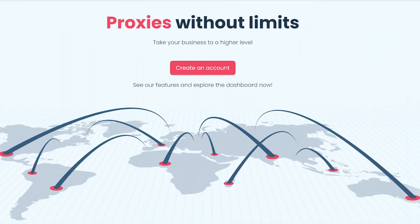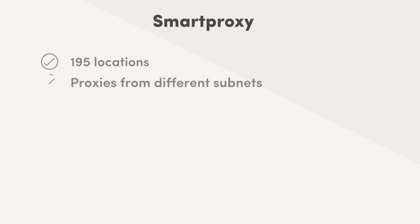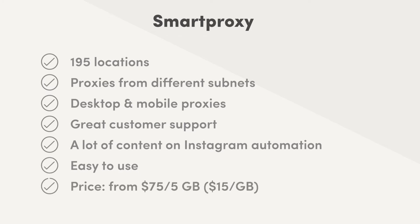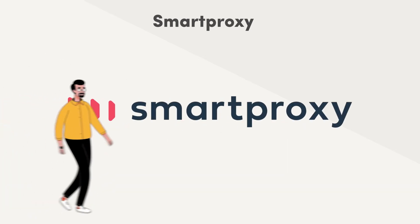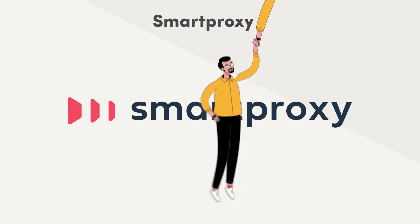One provider we like a lot is Smart Proxy, and for good reasons. It has a large rotating residential proxy network that allows targeting nearly 200 locations and doesn't share subnets. IPs come from both desktop and mobile devices. Smart Proxy offers great customer support and plenty of content on Instagram automation. This proxy provider is simple to use and it doesn't cost much for what you get — prices start from $75 for 5GB, which is $15 per gigabyte. It's no wonder why Smart Proxy is such a popular choice for social media automation.